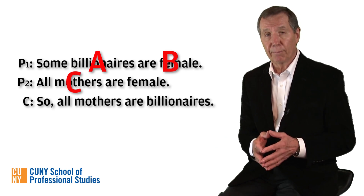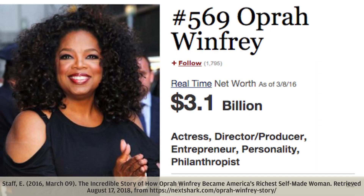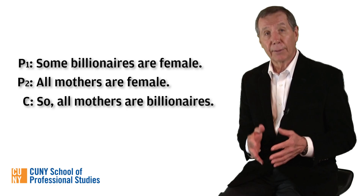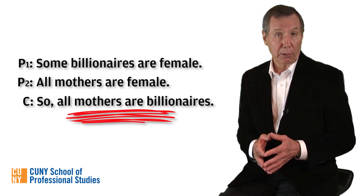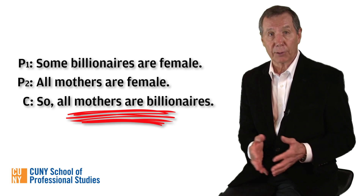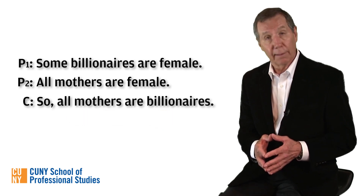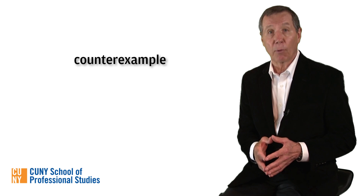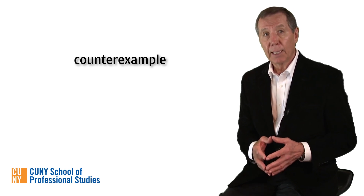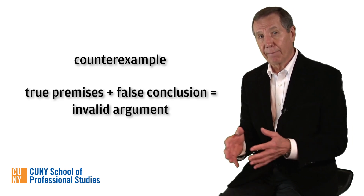The first premise — that some billionaires are female — is clearly true; Oprah Winfrey is a prime example. The second premise — that all mothers are female — is true by definition: a mother is a female parent. And the conclusion — that all mothers are billionaires — is patently false; there are very, very few mothers who are billionaires. In fact, not even Oprah is a billionaire mother since she doesn't have children. That's all we need to do to prove that the original snake argument is invalid: come up with one counter example — one way of filling in the placeholders in its form to get true premises and a false conclusion.